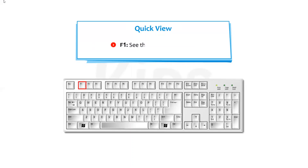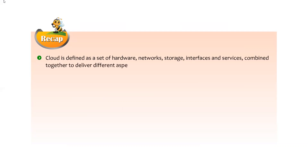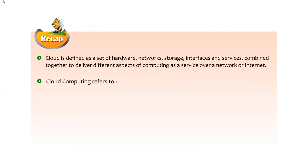F1 opens the Picasa Help Center. Let's take a recap of this chapter. Cloud is defined as a set of hardware, network, storage, interfaces, and services combined together to deliver different aspects of computing as a service over a network or internet. Cloud computing refers to manipulating, configuring, and accessing applications online.